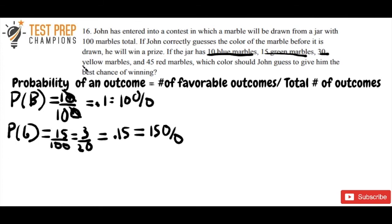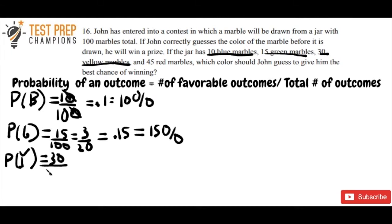Now let's move on to yellow. We've got 30 yellow marbles. I write P(Y) — probability of yellow. There are 30 chances to pull a yellow marble out of 100 total, so we have 30 divided by 100. We can take a zero off both of these, giving 3 over 10 as a fraction, 0.3 as a decimal, or 30% as a percent.